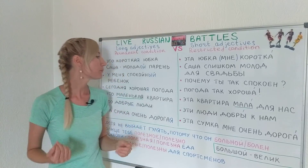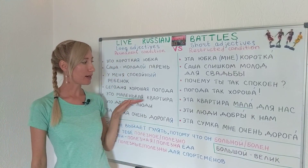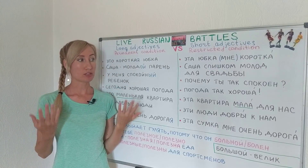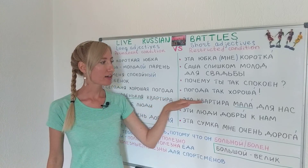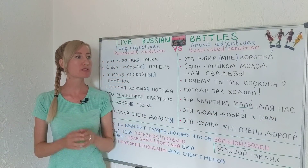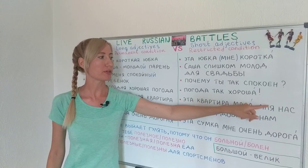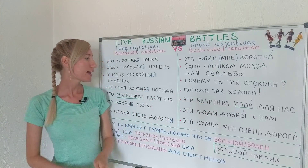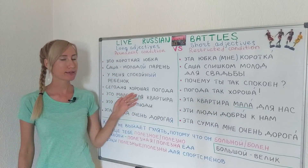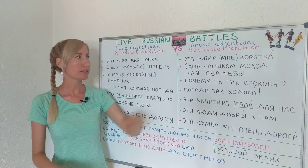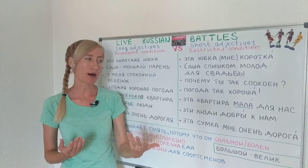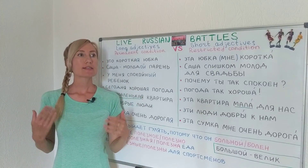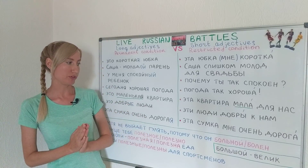Это маленькая квартира — this is a small apartment, a general statement everyone would agree with. Compare with это квартира мала для нас — this apartment is too small for us. We use the short form because there is a restricted condition: for us it's small, but it wouldn't be small for some other family. Note the exception: маленькая becomes мала in its short form — memorize it with the stress.